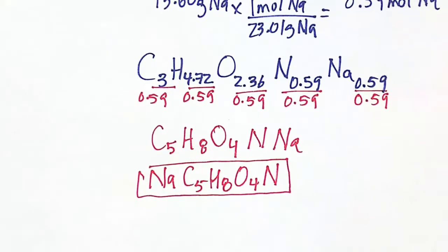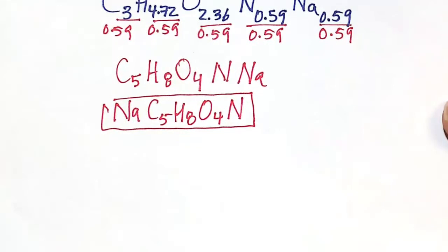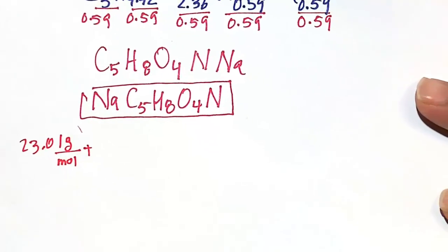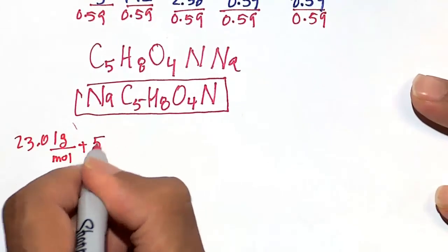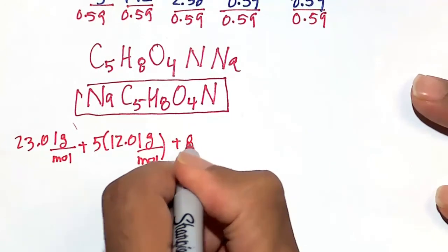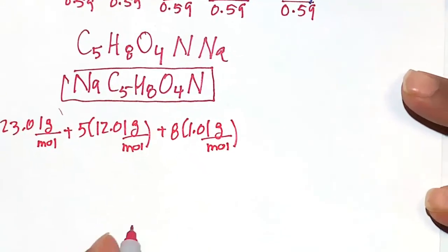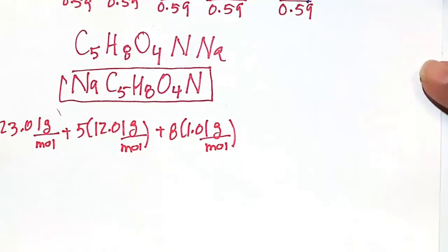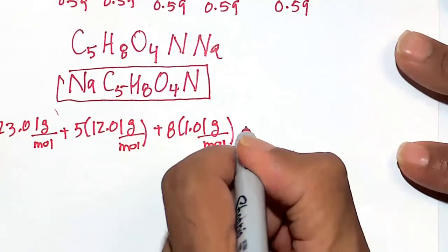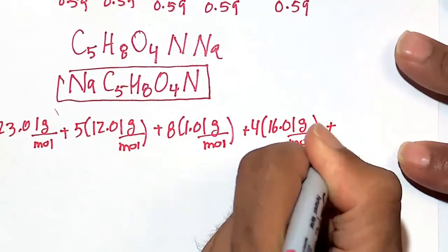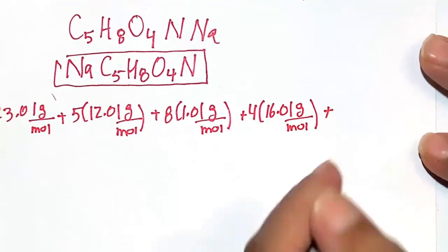So, sodium is about 23.01. Okay, carbon is about 12.01, but we've got 5 of them. Hydrogen is 1.01 grams per mole. Oxygen is 16.01, but we've got 4 of them, so multiply it by 4. And then, finally, nitrogen is 14.01.